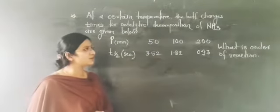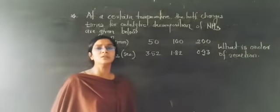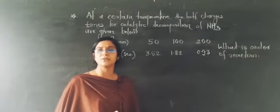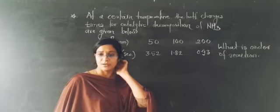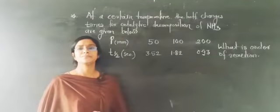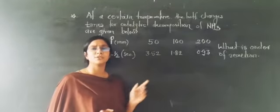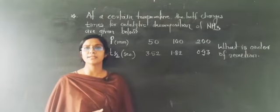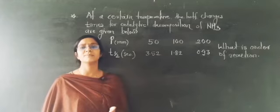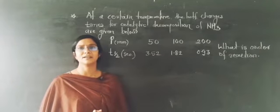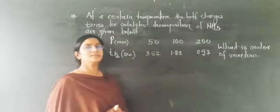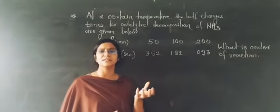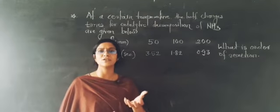In this case, we want to find out the order of the reaction. This type of numerical can appear in competitive exams like NET, SET, GATE, SLATE, etc. This numerical is based on tricks, so we should understand what type of relationship is developed in this numerical.